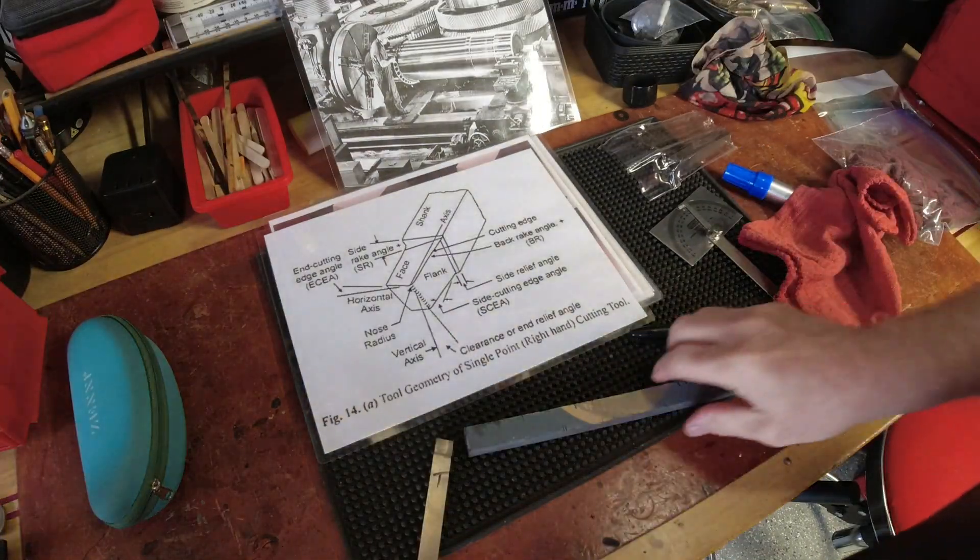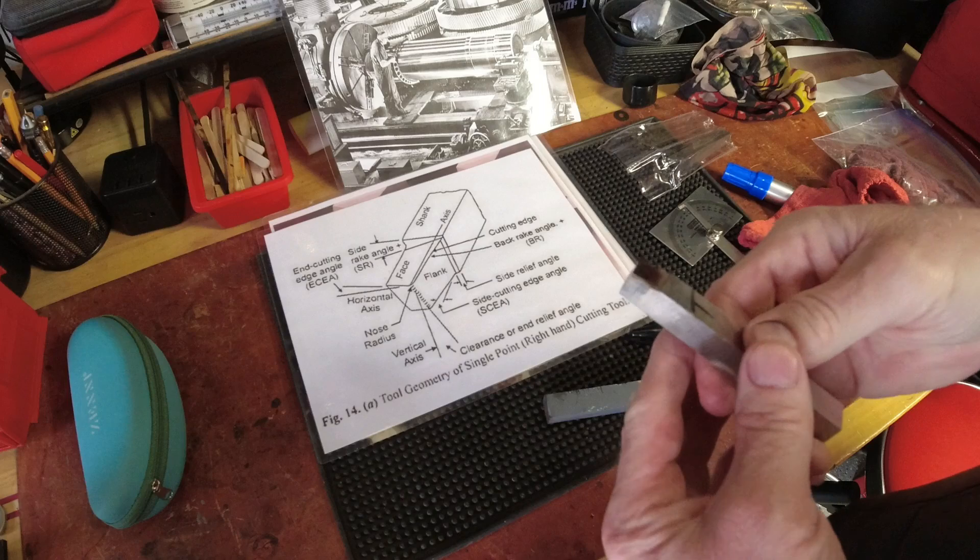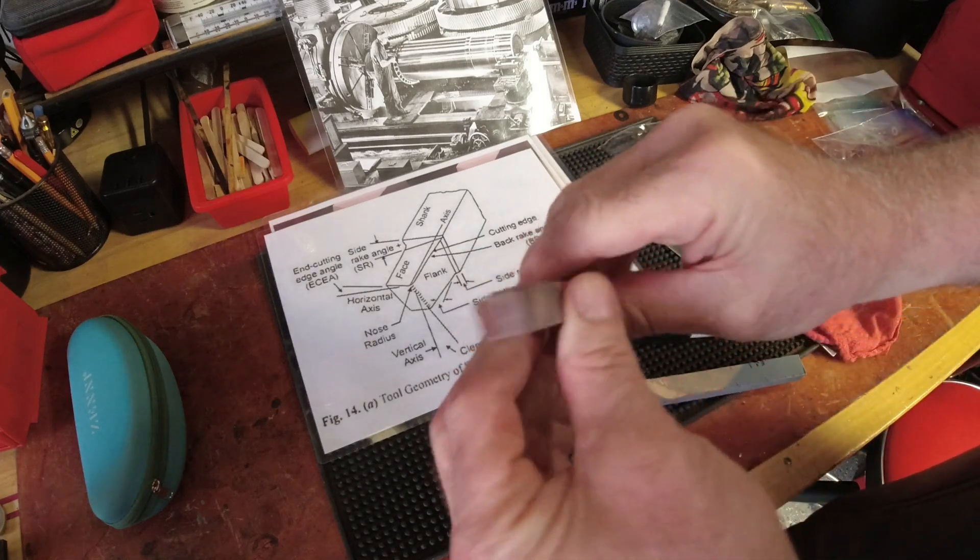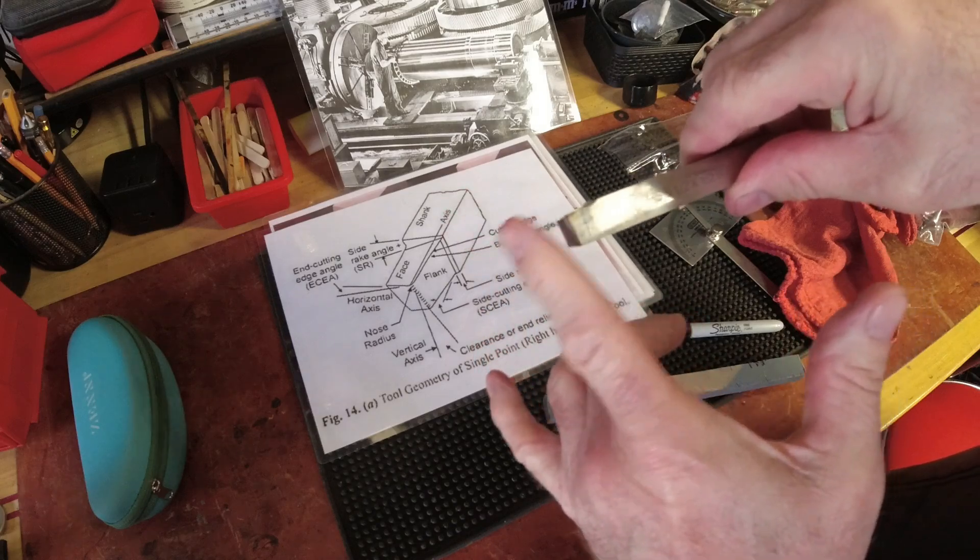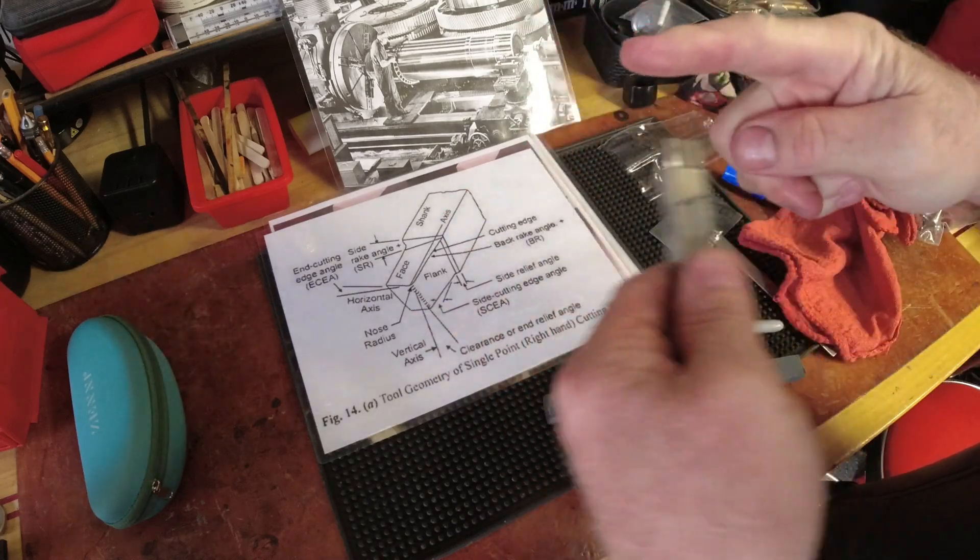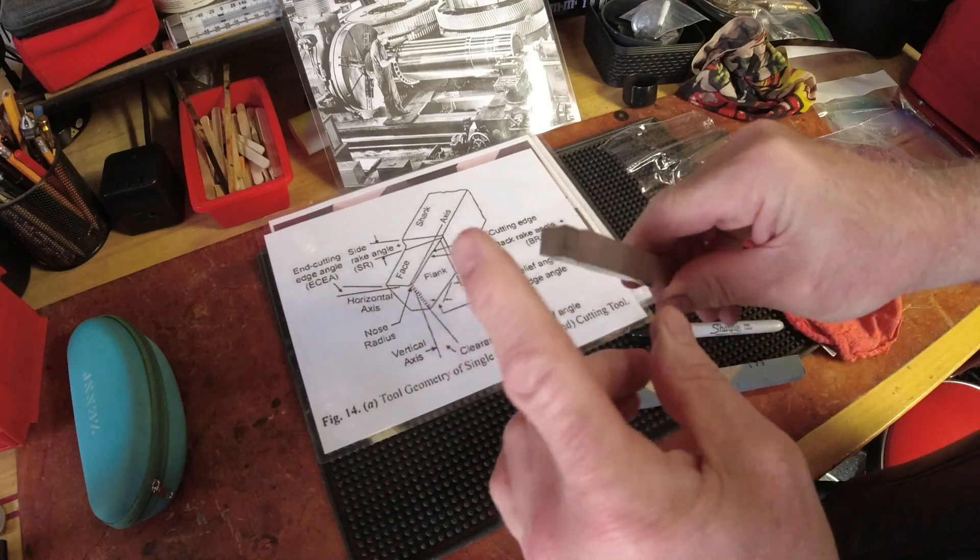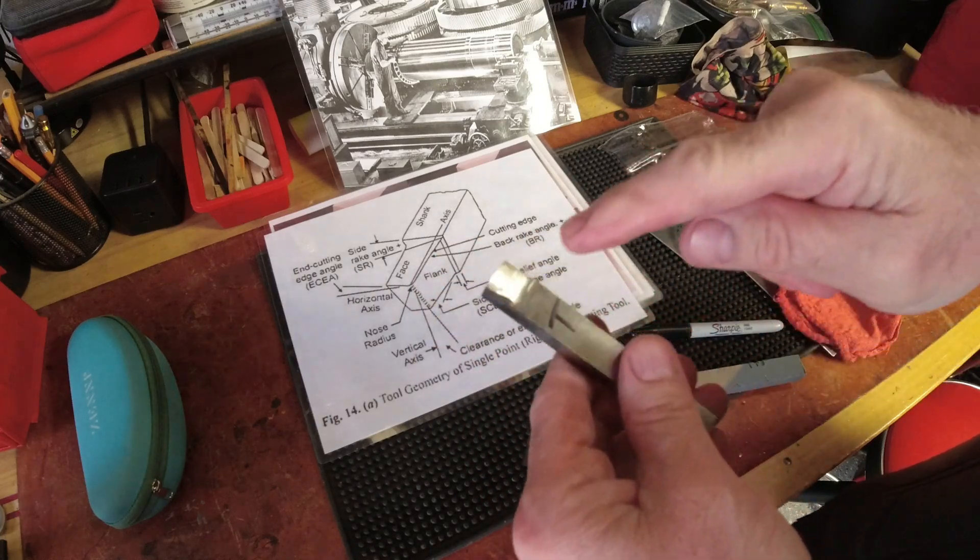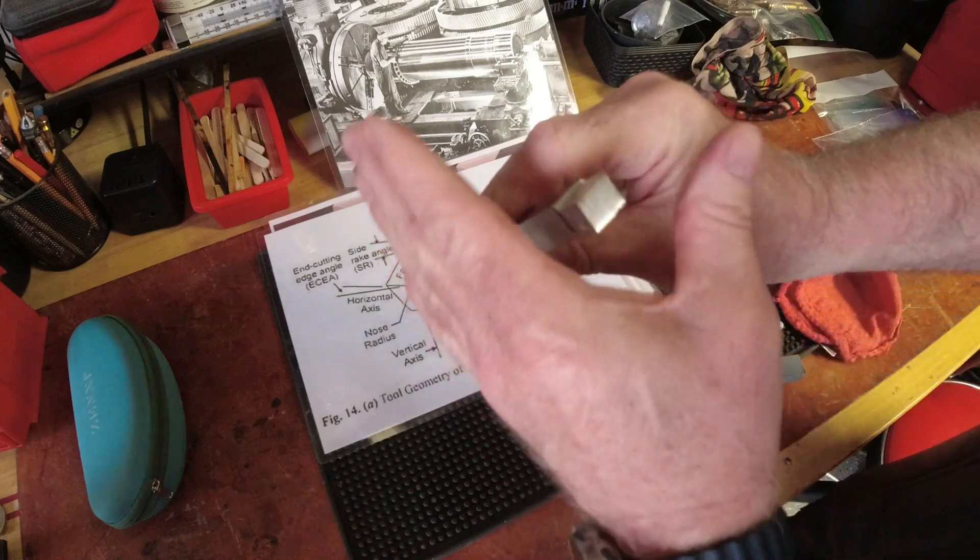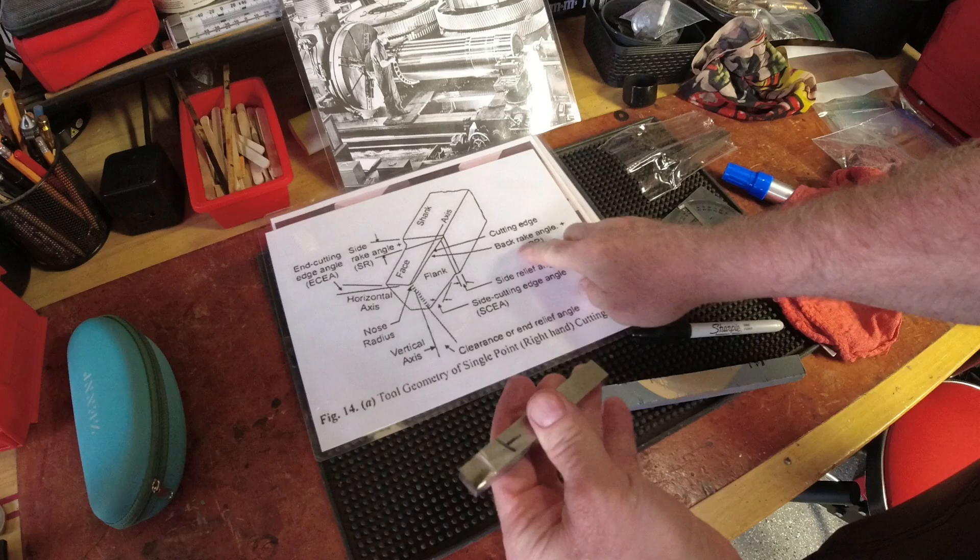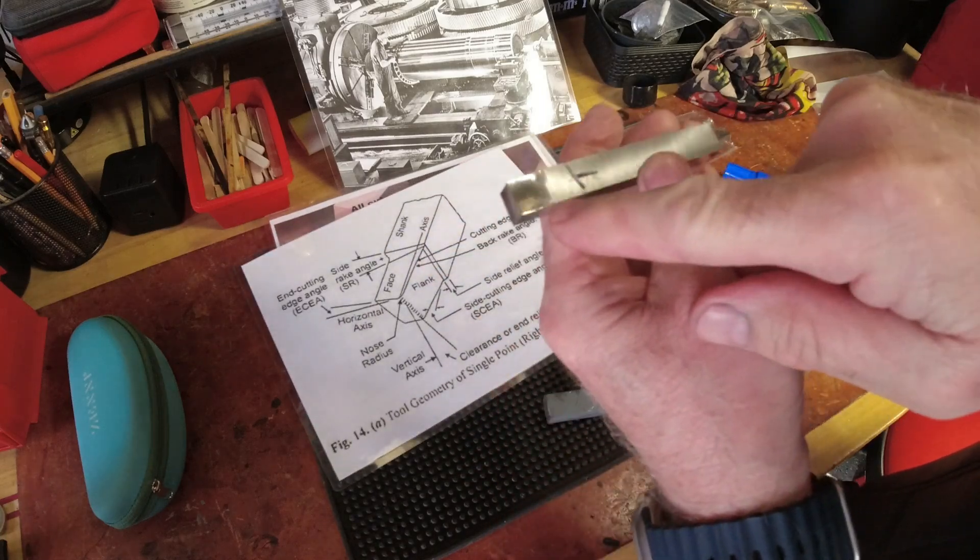All right, you can hear the grinder spinning down in the background. So we're going to say that we have the face cut. Highest point is going to be a right cutting tool. So we cut the face. Then I cut this angle, which is that angle. And I tried to put this back rake right here.